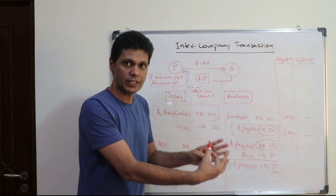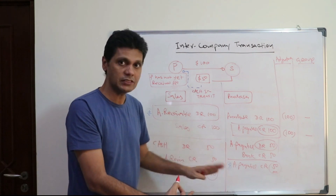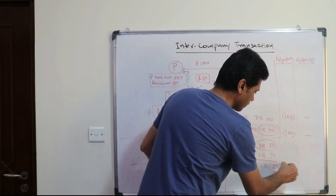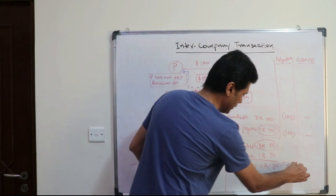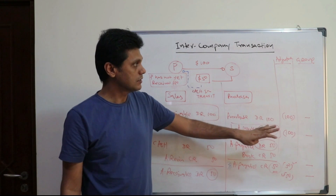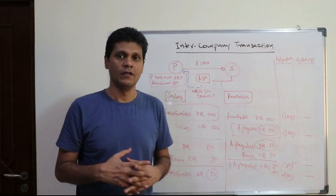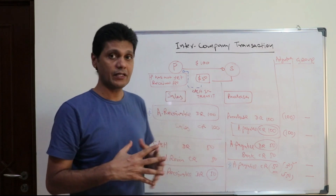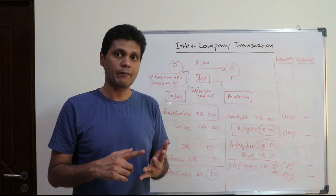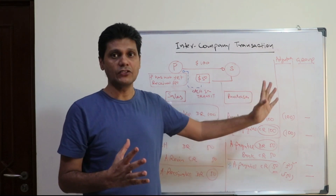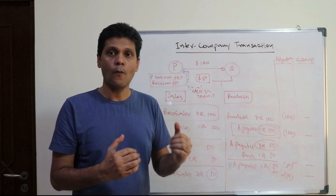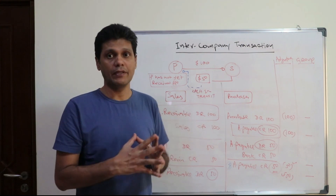When it comes to the group financial position, these intercompany balances will not be reflected in the group. Now the balances are equal, so you need to eliminate: the accounts receivable will be eliminated and the accounts payable will also be eliminated. Therefore in the group, there won't be any balances recorded in the group financial position. Let's recap: when there is an intercompany transaction, intercompany receivables and payables have to be eliminated from the group financial statement, because as far as the group is concerned, the group has made neither a sale nor a purchase.